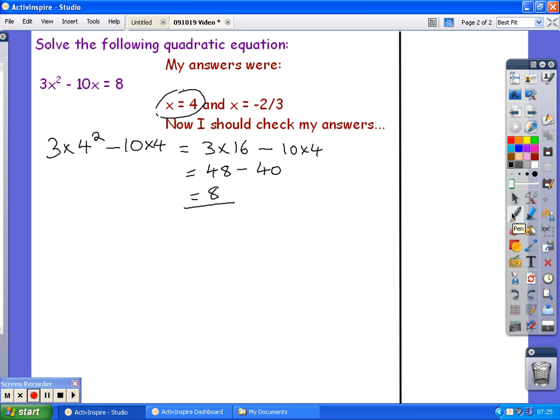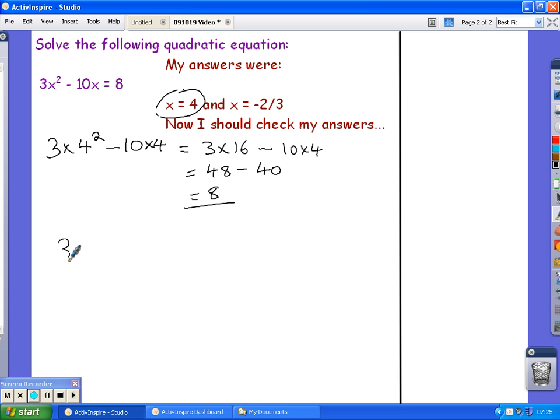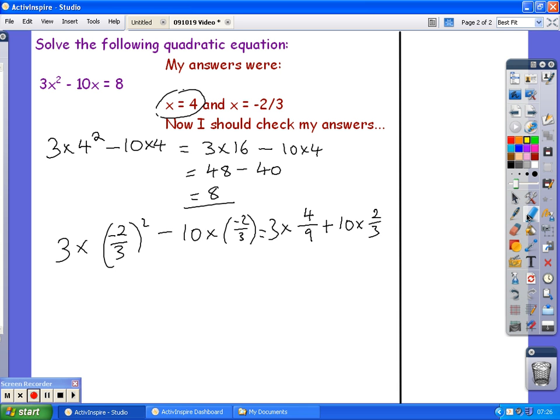The second one was negative 2 thirds. So, I'll substitute that in. Negative 2 thirds squared. Well, I'm going to get 4 ninths. And anything negative that's squared ends up positive. Because negative times negative is positive. And then I've got 3 on the outside. Subtract. I've got a negative times another negative in a moment. Because I've got 10 times negative 2 thirds. So, that's going to be plus 10 times 2 thirds. That was the two negatives.